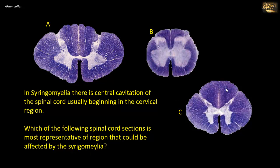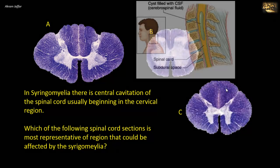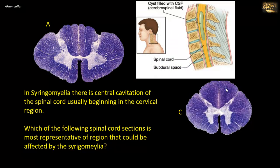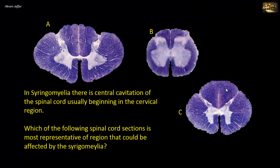In syringomyelia, there is central cavitation of the spinal cord, usually beginning in the cervical region. Which of the following spinal cord sections is most representative of the cervical region — the region that could be affected by syringomyelia?